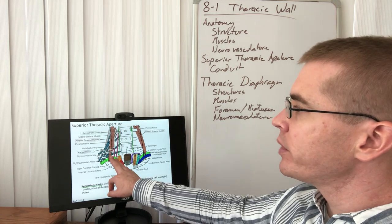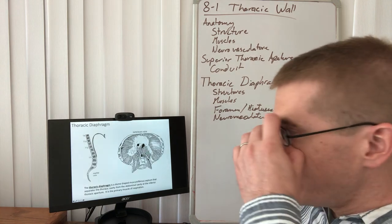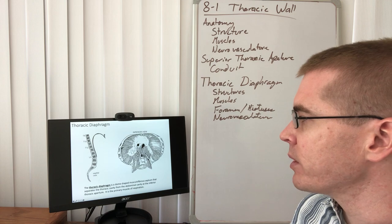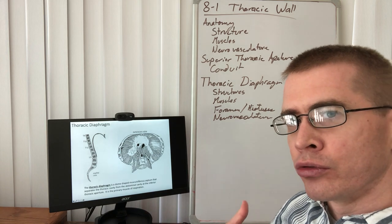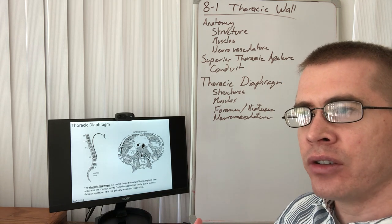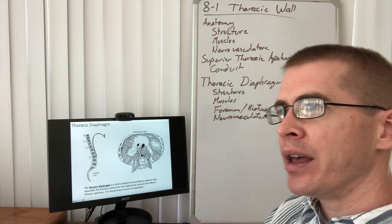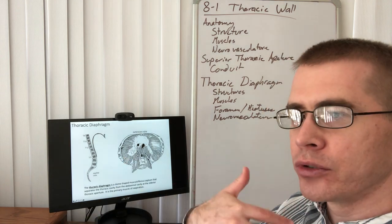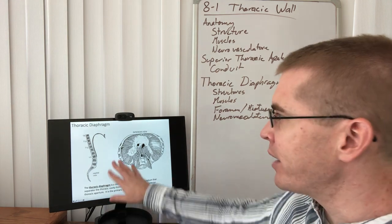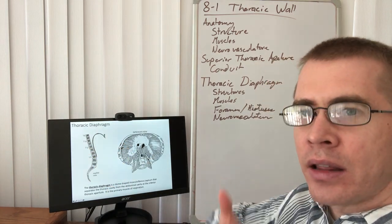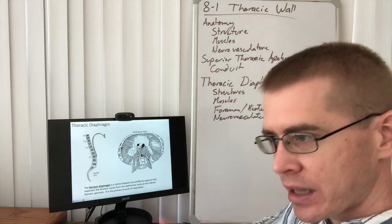The brachial plexus comes out through the scalenes as they attach to the first rib. The diaphragm has a number of different components, and its purpose is to expand the thoracic cavity to draw air into the lungs, creating a low-pressure area. That low pressure is relieved by the inflow of air through the trachea to fill the lungs. To exhale, the diaphragm relaxes, decreasing the space inside the thoracic cavity and expelling air.